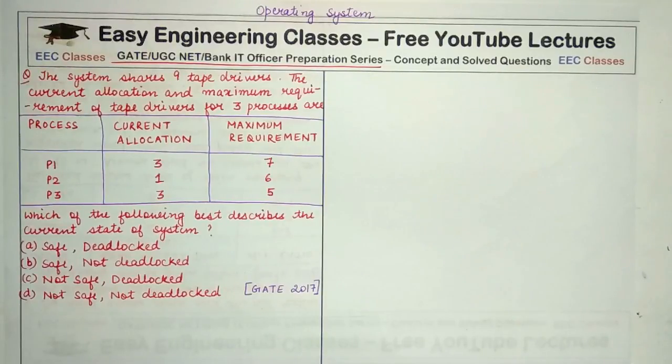So let's get started with it. The question is: the system shares 9 tape drivers. The current allocation and maximum requirement of tape drivers for 3 processes are given to you, P1, P2, P3.